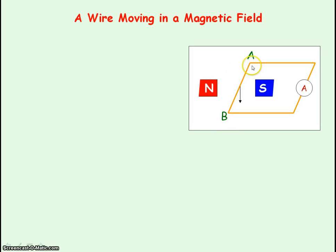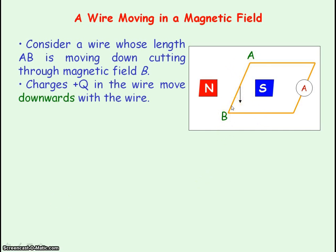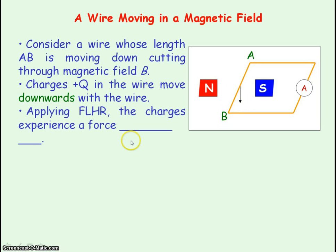Here we have wire AB, which we're moving downwards, so it's cutting through the magnetic field lines of the north to south pole — the magnetic field lines are directed from north to south. We can say this wire contains charges plus Q, and as we move the wire downwards, the charges plus Q in the wire also move down with the wire. So you have charges moving perpendicular to a magnetic field, meaning they will experience a magnetic force. We can use Fleming's left hand rule to get the direction of the magnetic force acting on these charges.